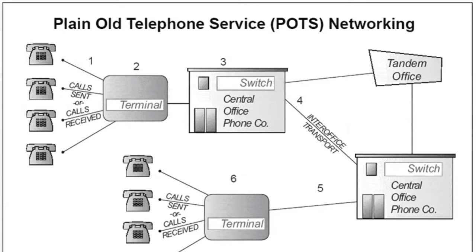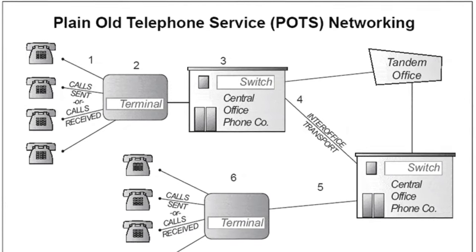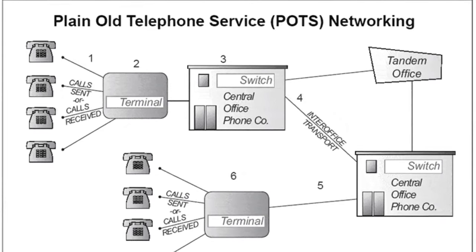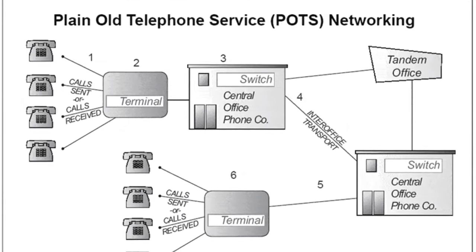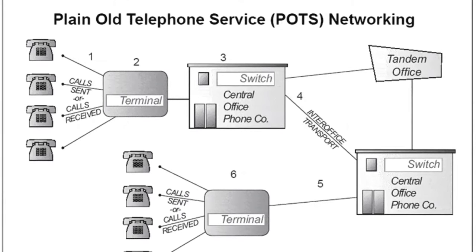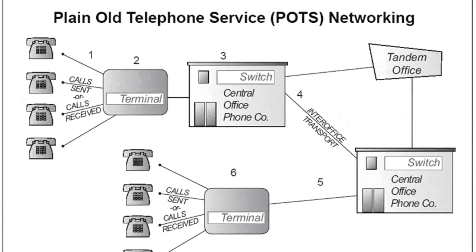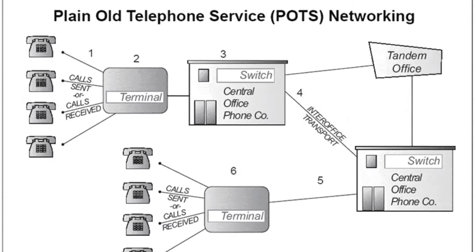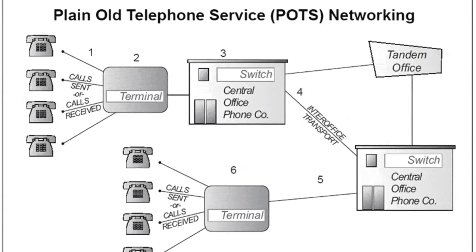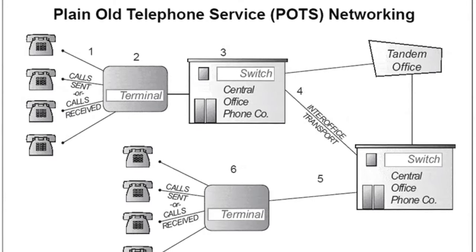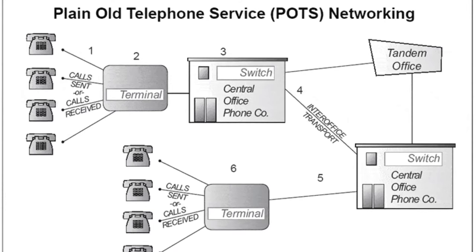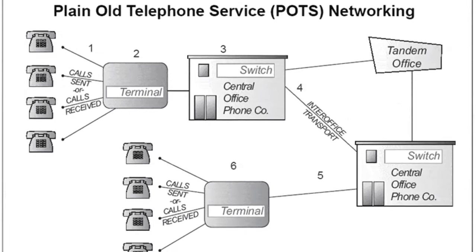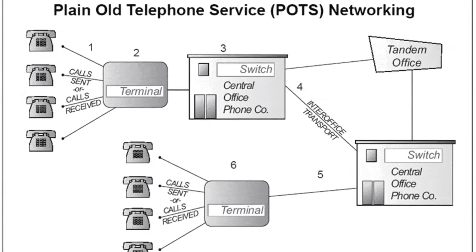Starting from your home or customer premises, two-pair copper twisted pair wire runs to your local telco's central office. This copper wire connection forms what is known as the local loop. The CO has switches that connect you to another local subscriber,